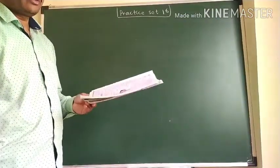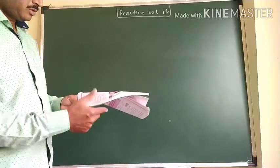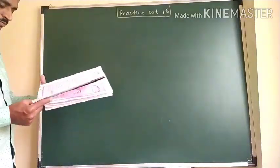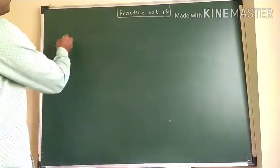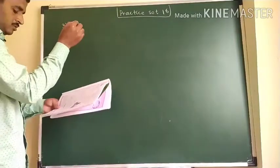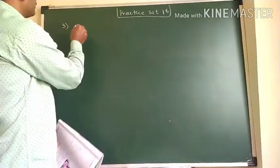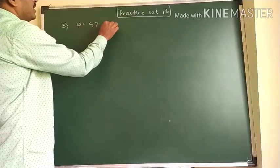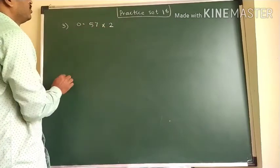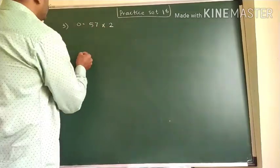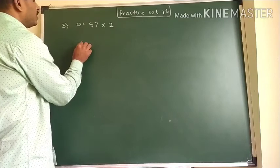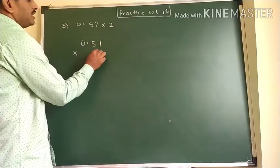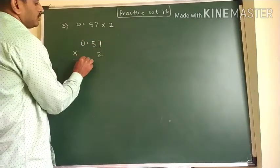Now we are going to see the next question of this practice, part 1: 0.57 × 2. We write it in vertical form: 0.57 × 2.